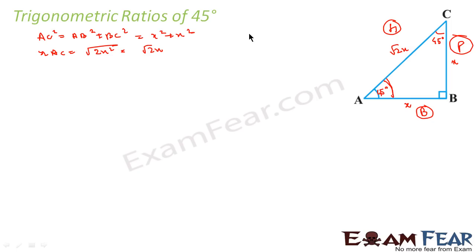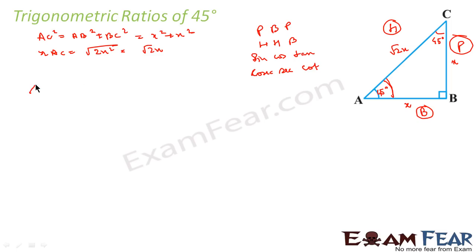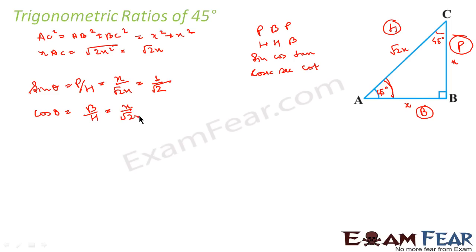Again I will use the mnemonic formula: Pandit Badri Prashad, Hari Hari — sin/cos/tan versus cosec/sec/cot. So sin θ = P/H = x / (√2·x) = 1/√2. Cos θ = B/H = x / (√2·x) = 1/√2. Tan θ = P/B = x/x = 1.